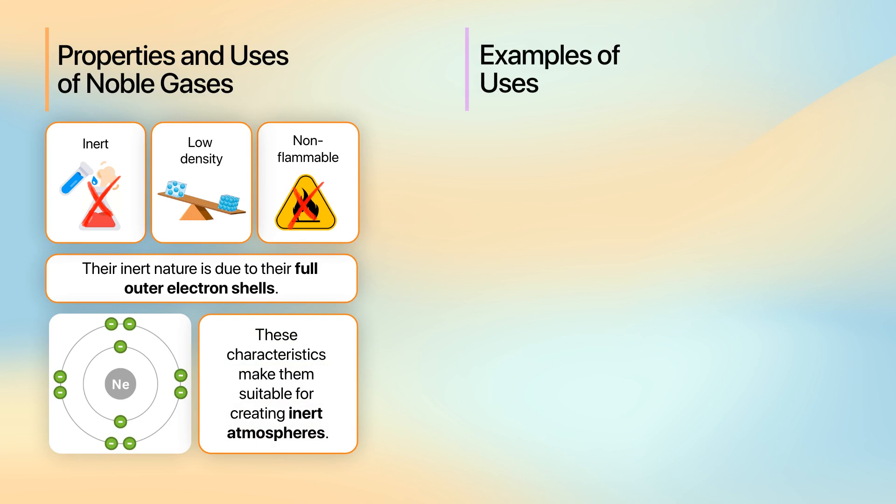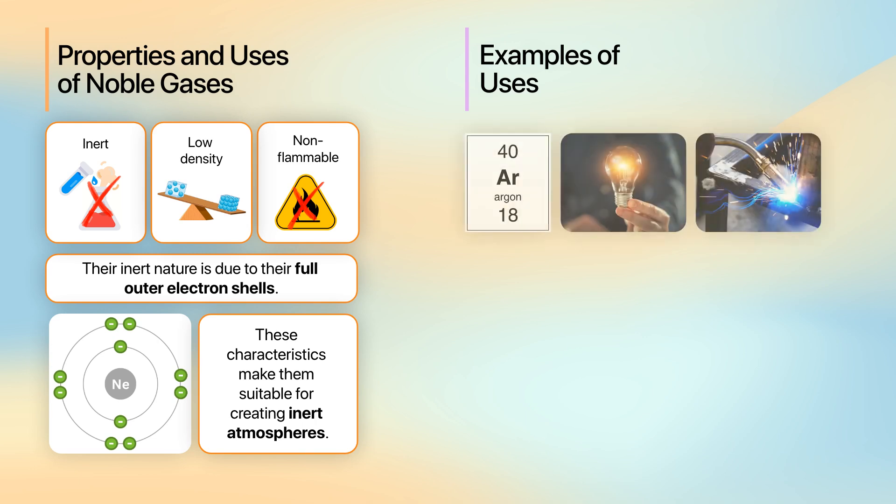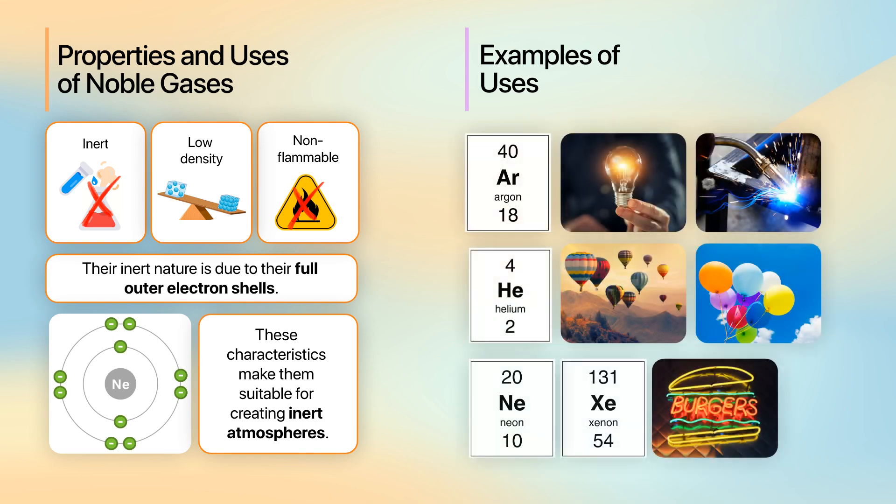Secondly, we looked at a range of practical examples of noble gases, including argon, helium, neon, and xenon. We were therefore able to see how each property of noble gases contributes to their functionality in different scenarios. This lesson has helped us understand the practical significance of the noble gases' chemical properties and how they are utilized in everyday life. See you next lesson!